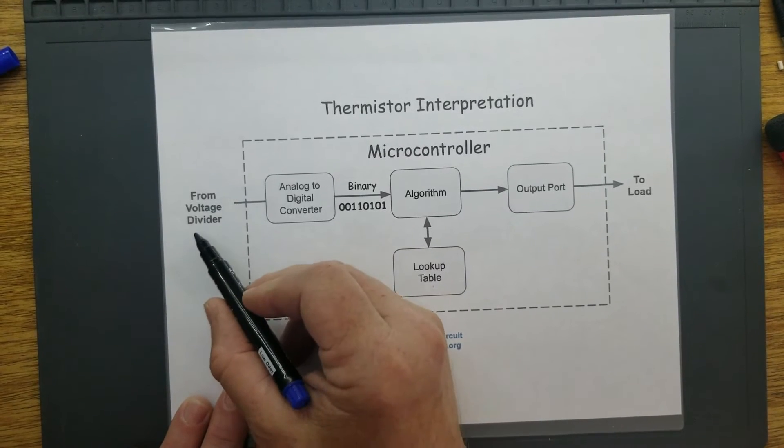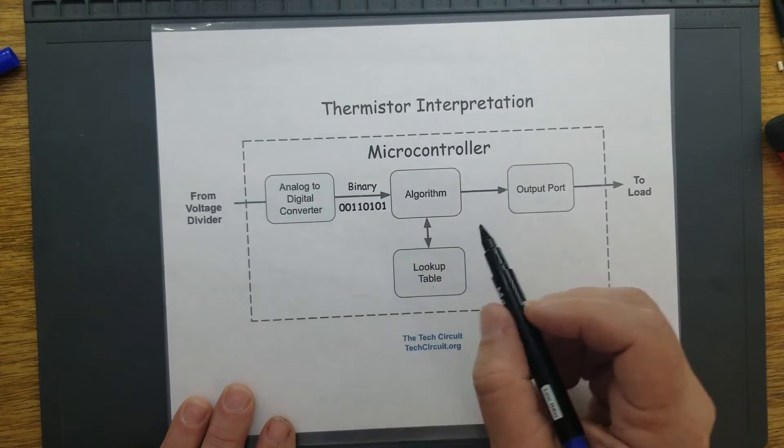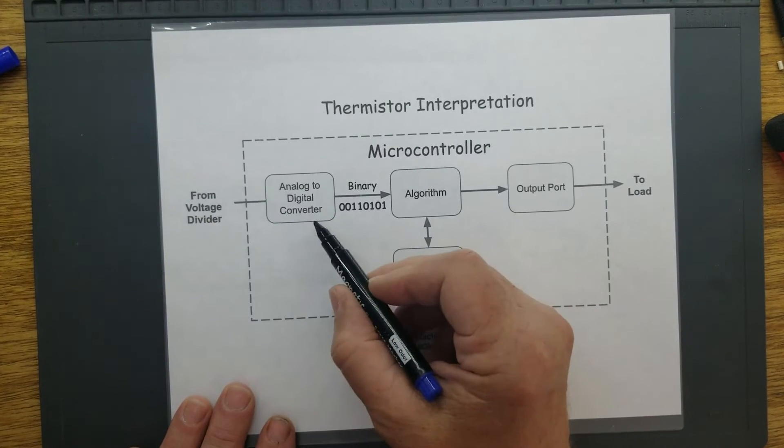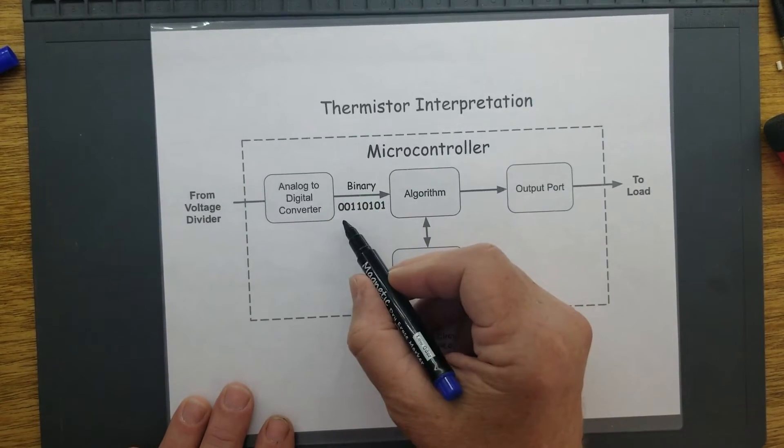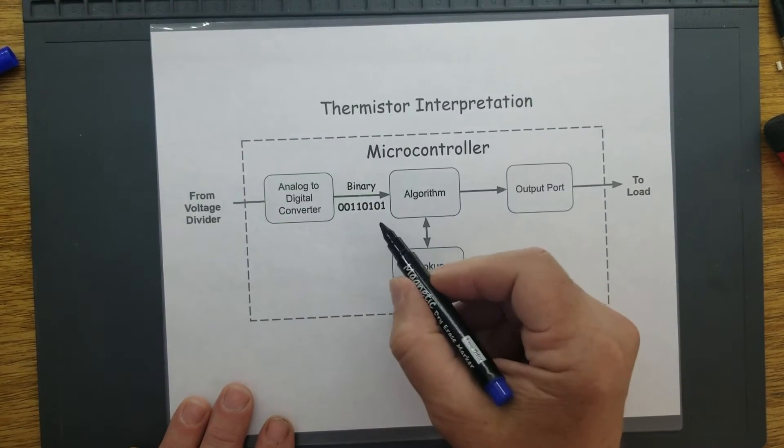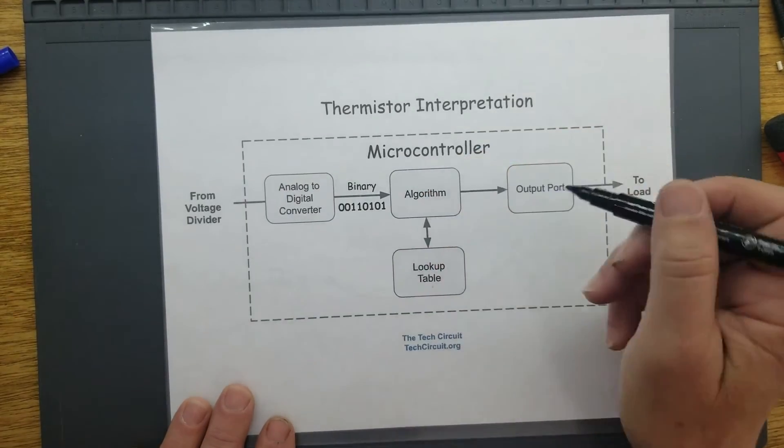That voltage coming from the voltage divider would be fed into an analog to digital converter, which would convert that voltage value into a digital or binary representation that the microcontroller can understand.